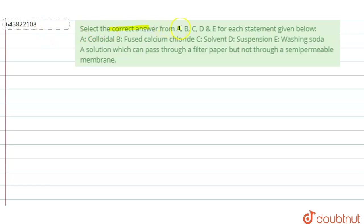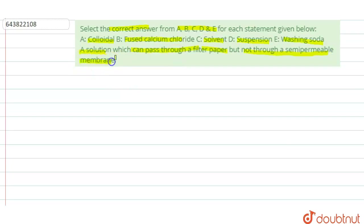The question is: select the correct answer from A, B, C, D, and E for each statement given below. A is colloidal, B is fused calcium chloride, C is solvent, D is suspension, and E is washing soda. They are asking for a solution which can pass through a filter paper but not through a semi-permeable membrane.